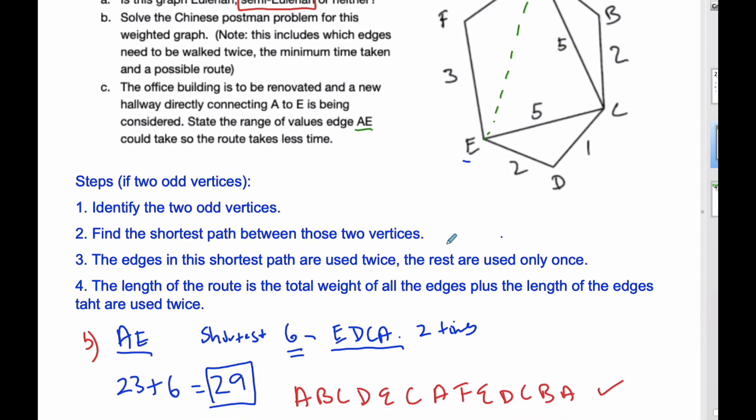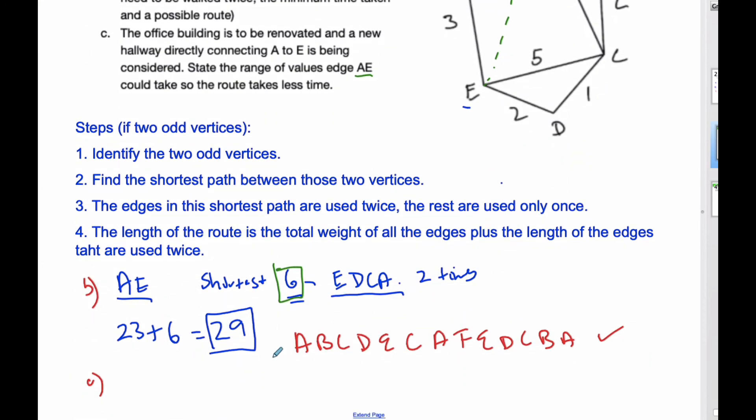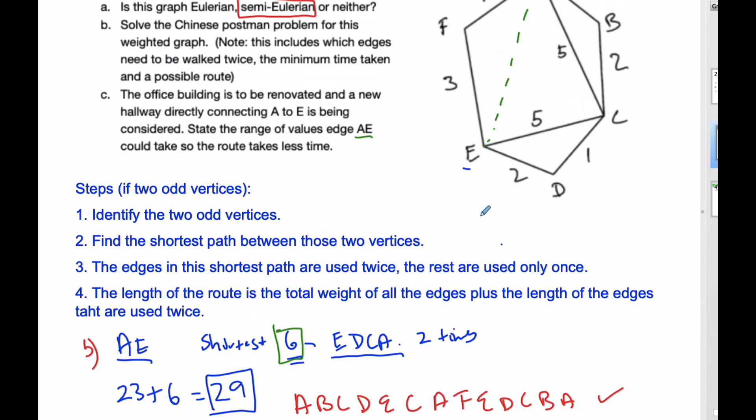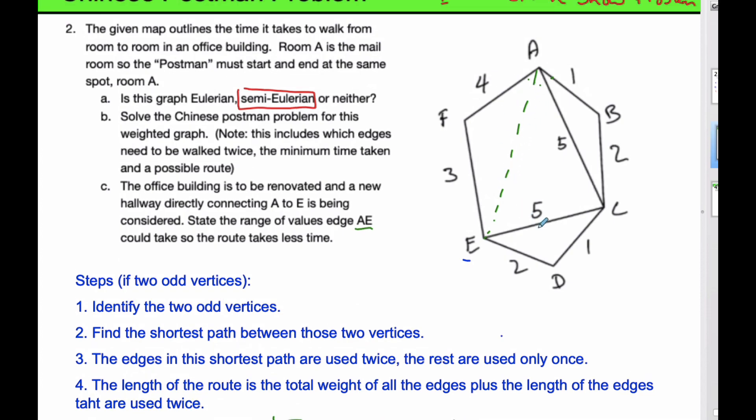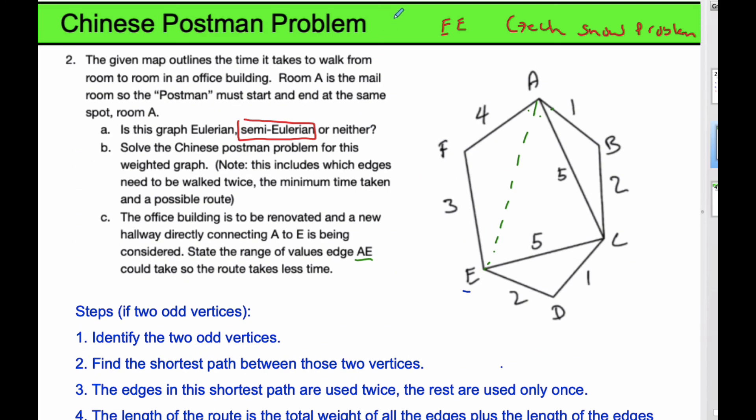It means I'm not going to have to do this extra 6. If I want to cover this and take less time, then this has to be less than 6, this path. The total weight of this route, so AE has to be less than 6 and it's got to be bigger than 0, between 0 and 6. If that is the case then the total time taken is going to be less and every edge will also be covered as well.